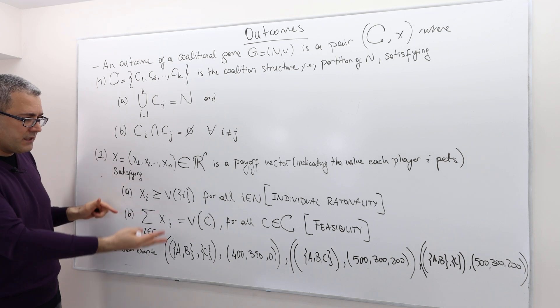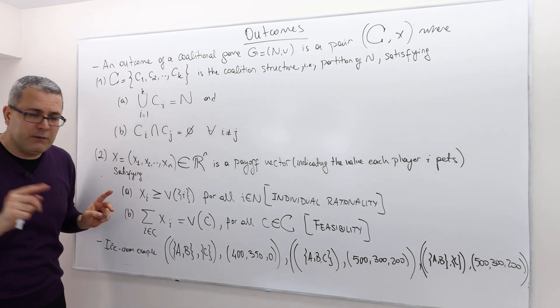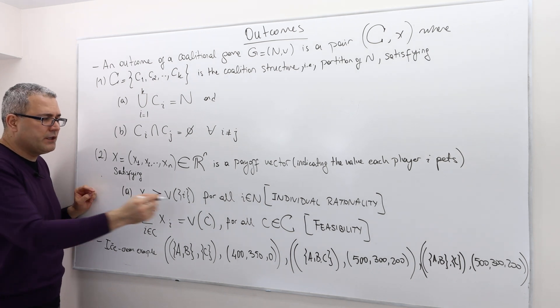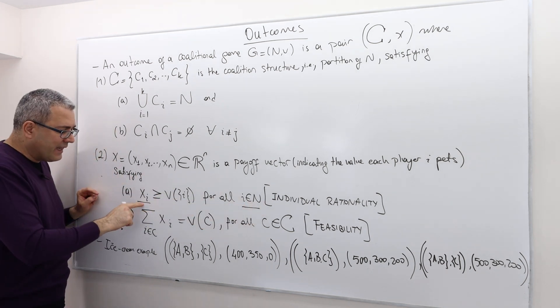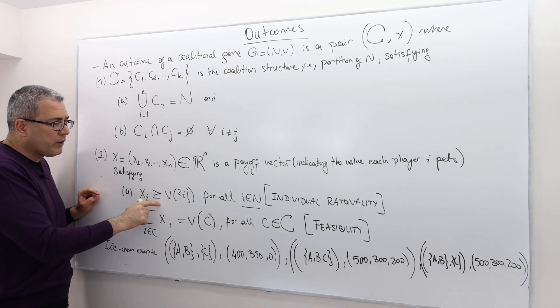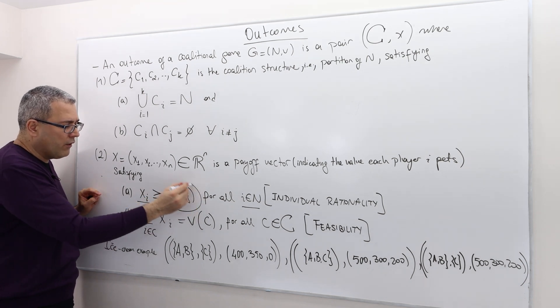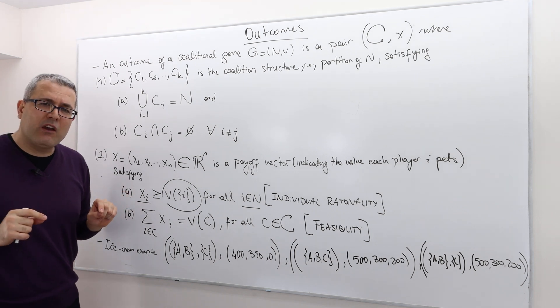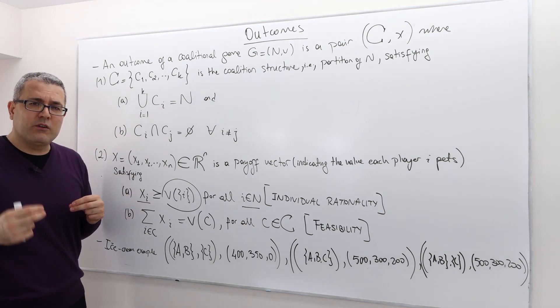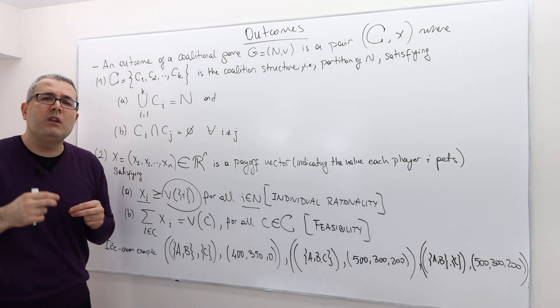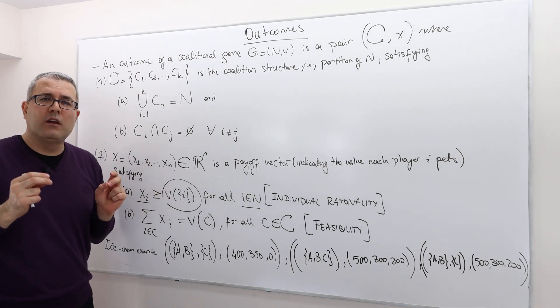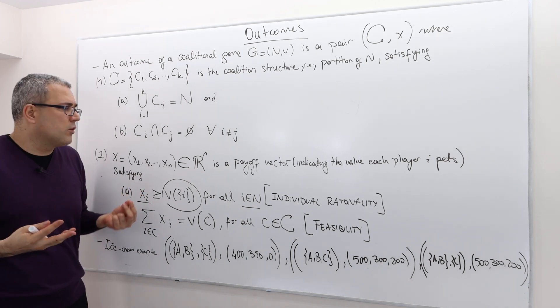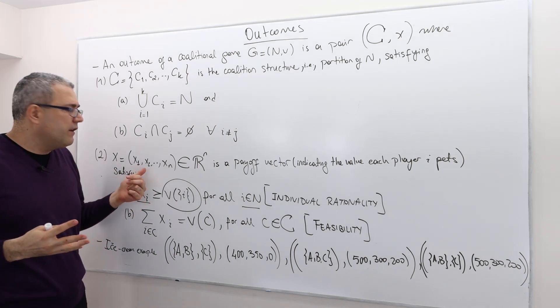And it also satisfies the following two very important properties. Well, first off, XI, so for every individual, for every player, XI should be greater than or equal to V of I. What does that mean? That means the payoff player I is going to get at the end of this game should be no less than his worth of being alone. Well, why is that so? Well, it makes sense, right?